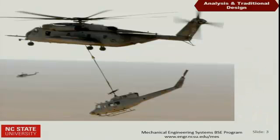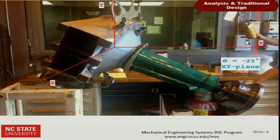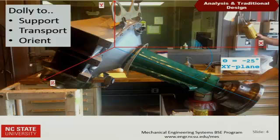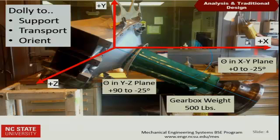I want to introduce a case study that I'm going to use several times through this explanation. In the picture, you see the Marine Corps CH-53 heavy lift helicopter. In the back is a tail rotor, and inside of there is a tail rotor gearbox. In one of our capstone design projects, the sponsor came to us and said they have this gearbox, and they would like us to design a dolly to support it, to transport it, and to orient it. The gearbox is about 500 pounds, and they wanted it to go in different orientations — for instance, from negative 25 all the way up to 90 degrees.